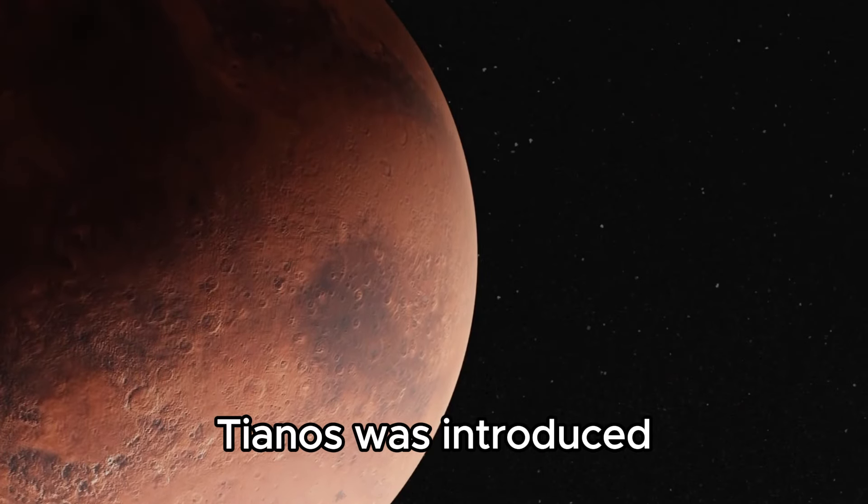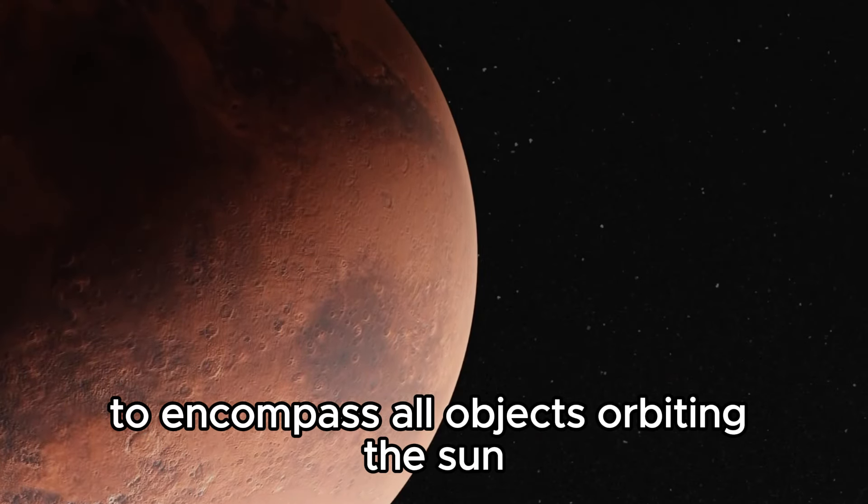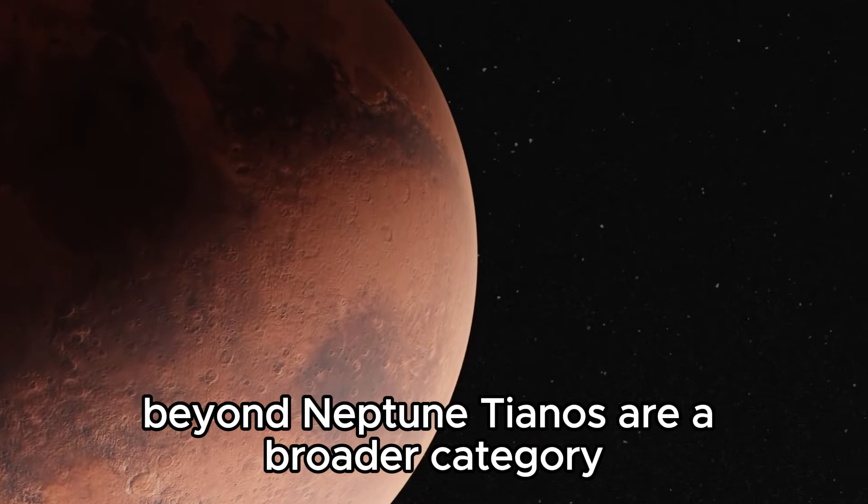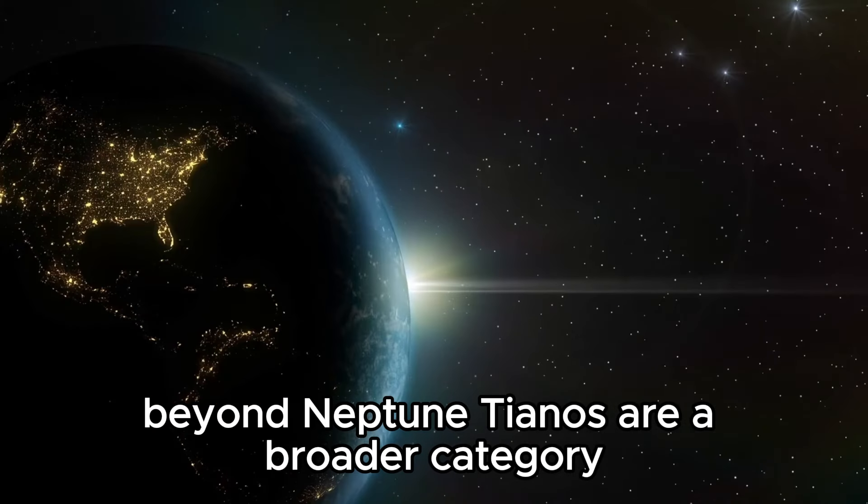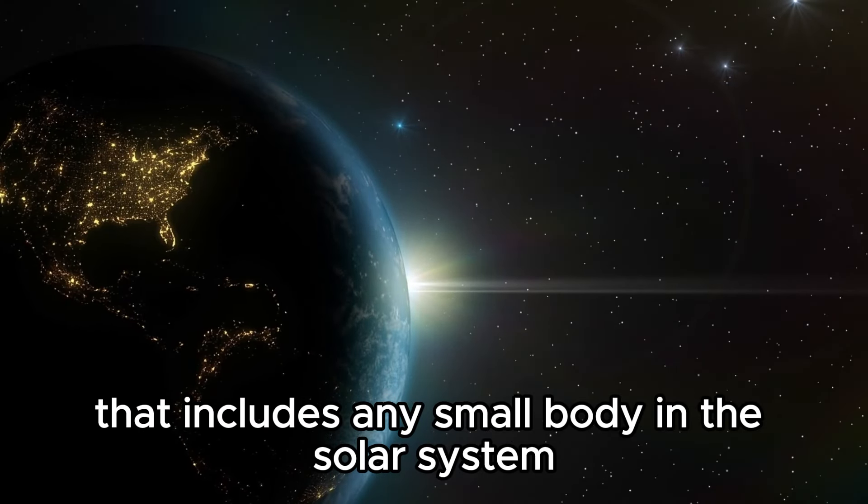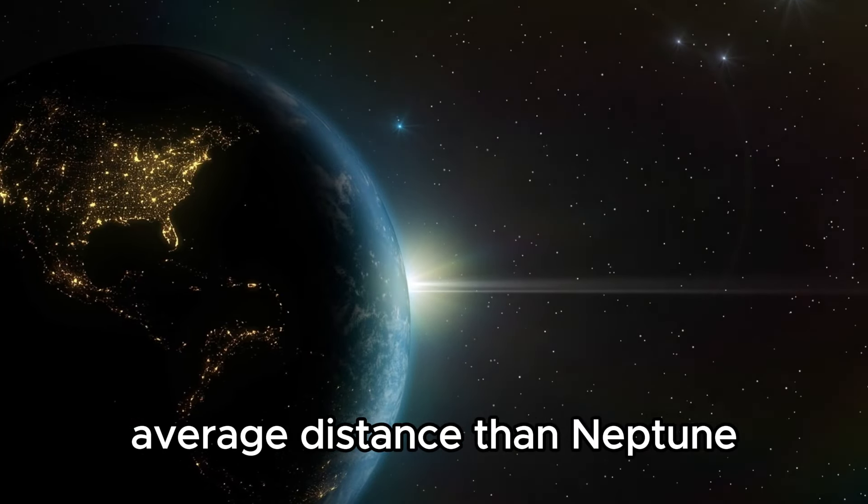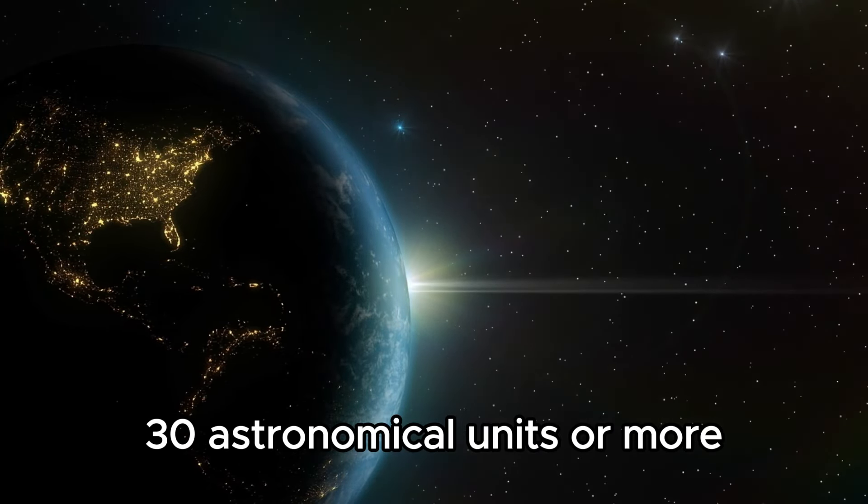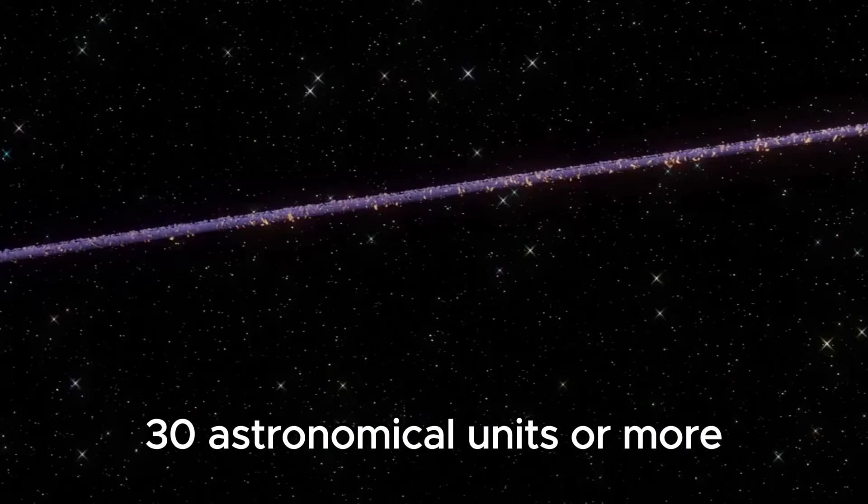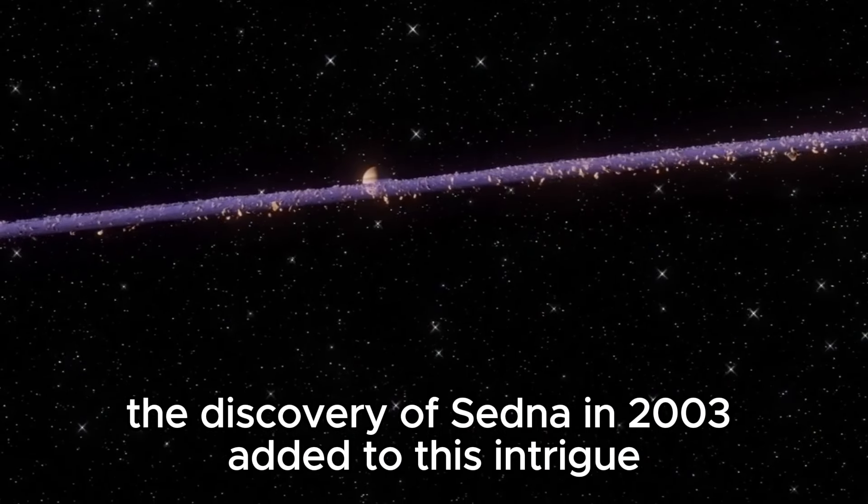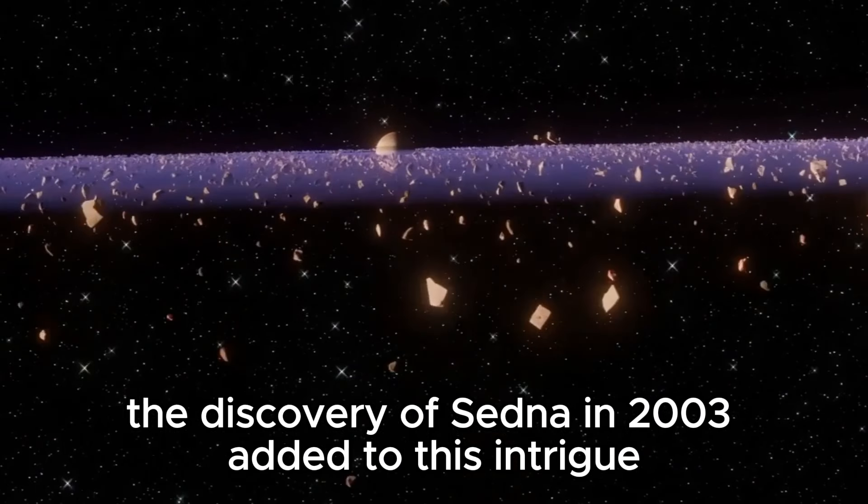As more objects were discovered beyond Neptune, the term Trans-Neptunian Objects, or TNOs, was introduced to encompass all objects orbiting the sun beyond Neptune. TNOs are a broader category that includes any small body in the solar system that orbits the sun at a greater average distance than Neptune, 30 AU or more.